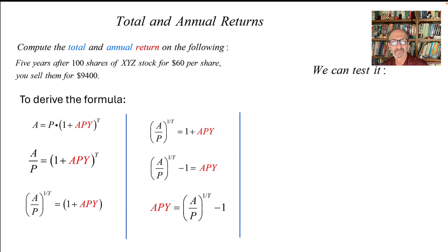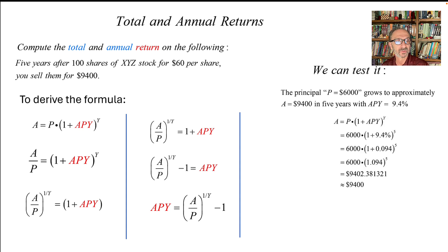We can test it. So instead of writing step by step, I have the following: we have P as $6,000, and the return was, or the new balance after five years, was $9,400 for 9.4 percent. So we have the starting amount.